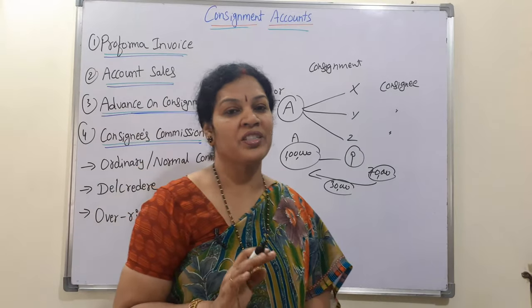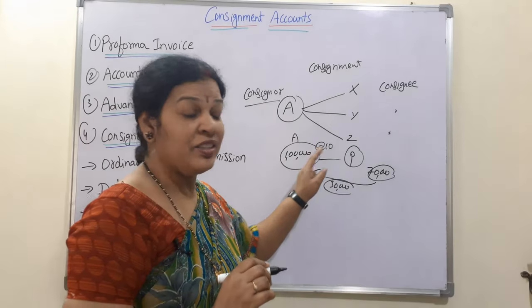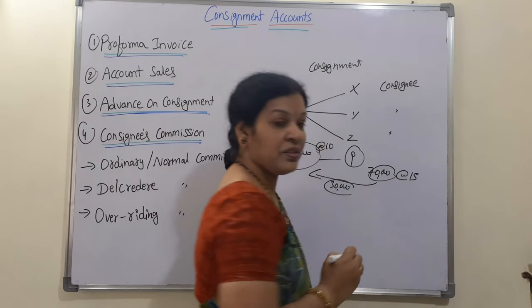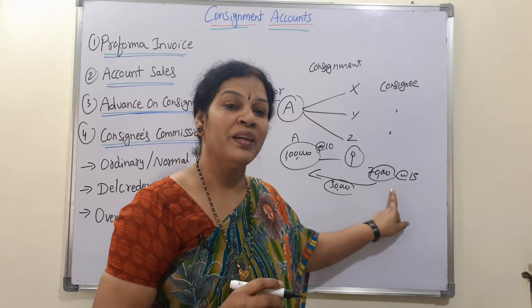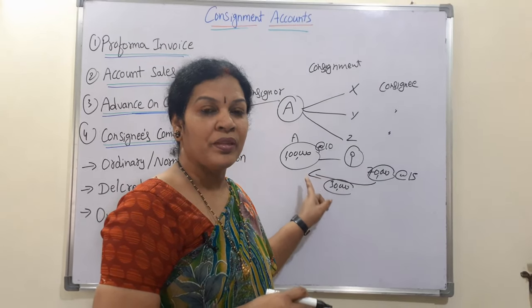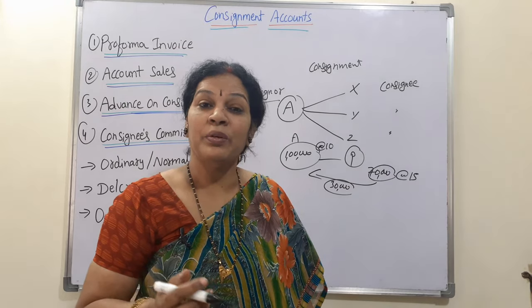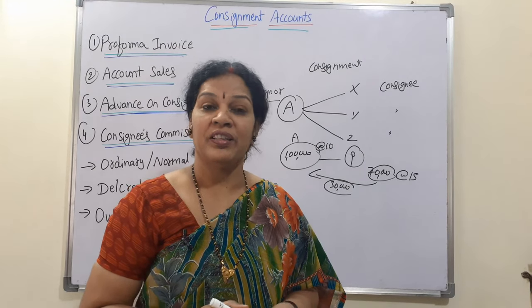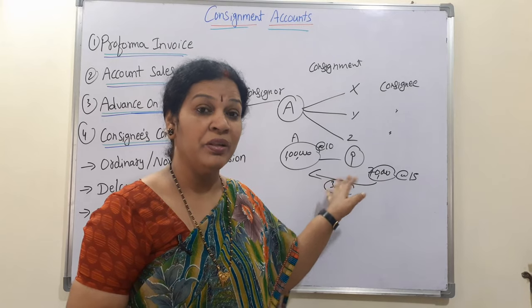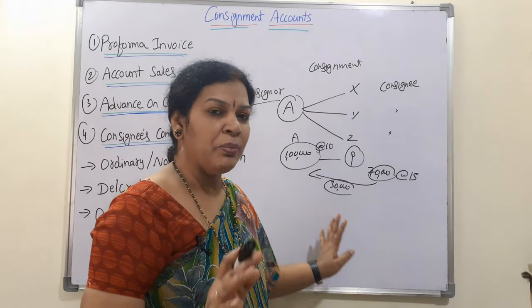For example, each good costs 10 rupees. The consignor instructs the consignee to sell the goods at 15 rupees. So the consignee sells at 15 rupees and returns the proceeds to the consignor. In return, the consignor gives commission — the commission percentage is an understanding between both parties, sometimes 5%, 10%, whatever is agreed — and the consignee receives that commission accordingly.